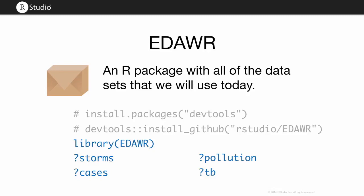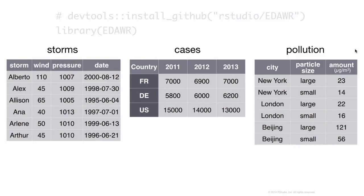Inside this package, I have some data frames that are fairly small but demonstrate the sort of layout and formatting issues you might encounter with data in R. For example, here are three data frames: some data about hurricanes in the Atlantic Ocean, some cases of a disease — in this case TB in different countries in different years — and some data about pollution. We could go through these and look at what variables are in each.